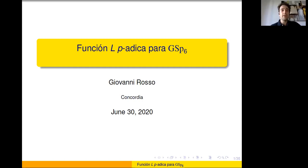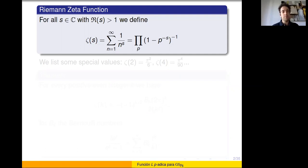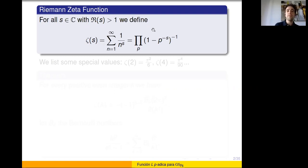Today we are going to talk about p-adic functions: what they are and how they arise. I start with an example that many people have seen, but it is always good to start with. The Riemann zeta function is defined by the infinite sum of 1 over n to the s, which converges absolutely when the real part of s is greater than 1, and you can rearrange it to get an expression as an Euler product.